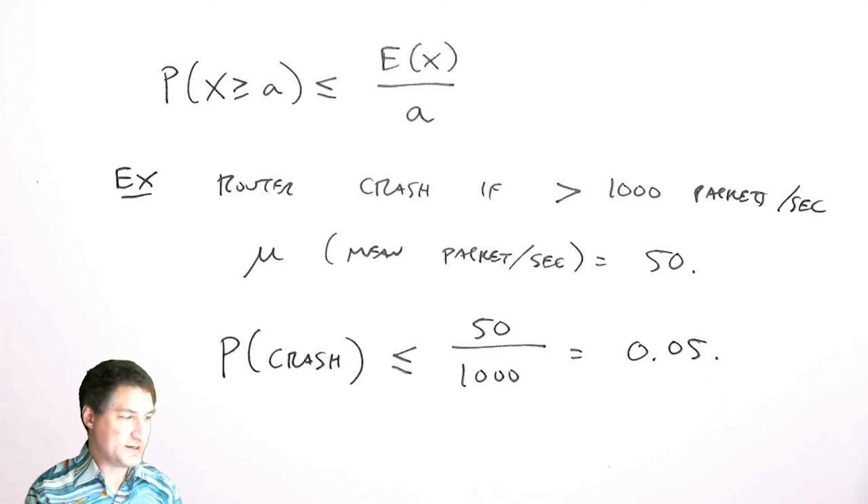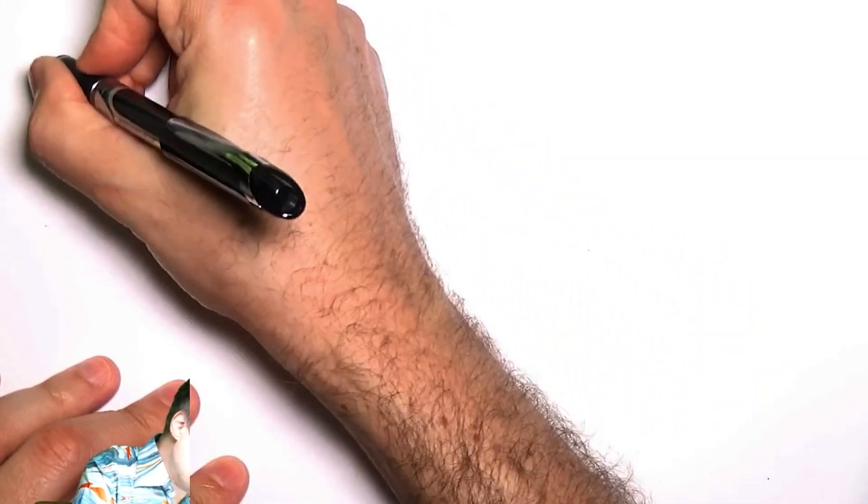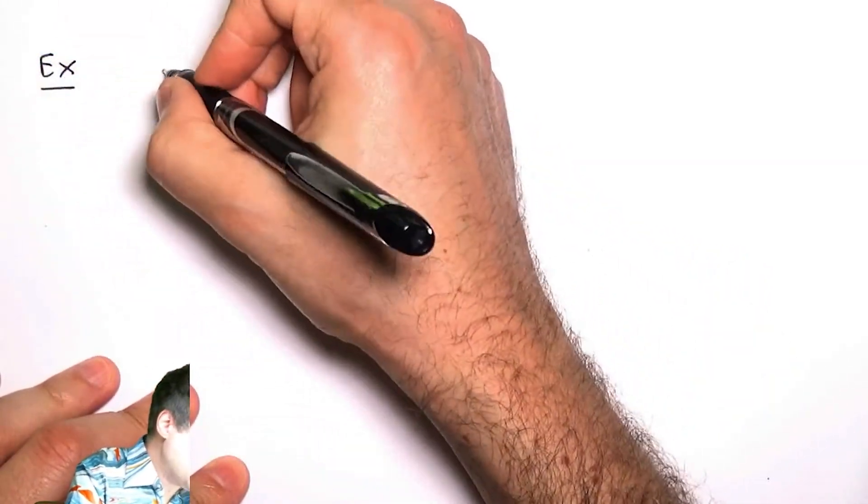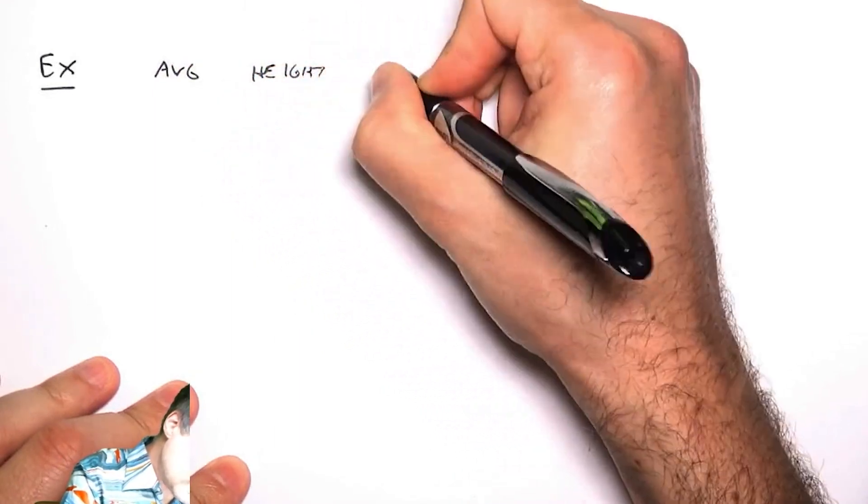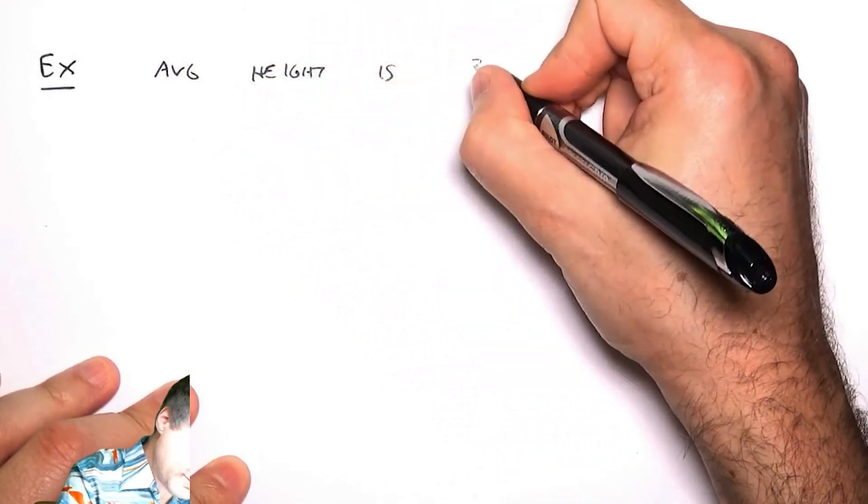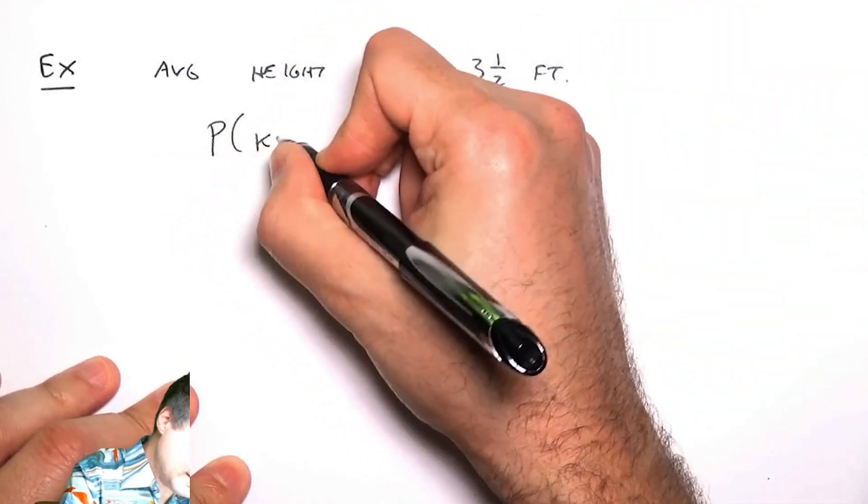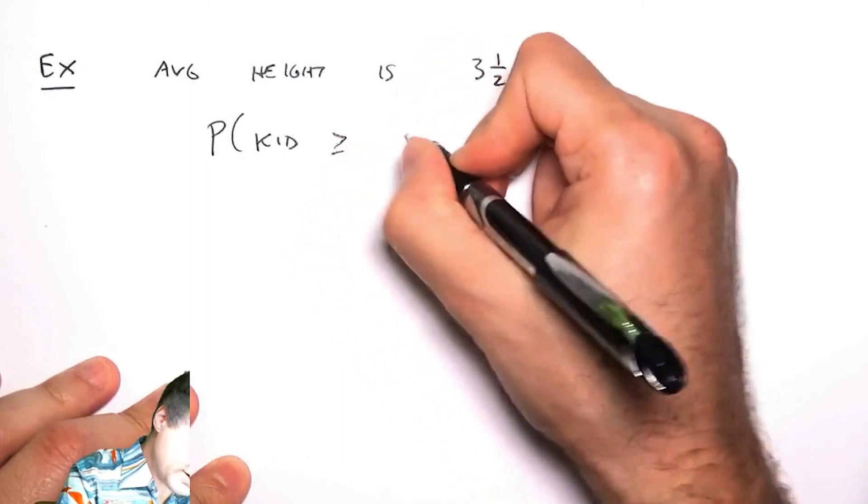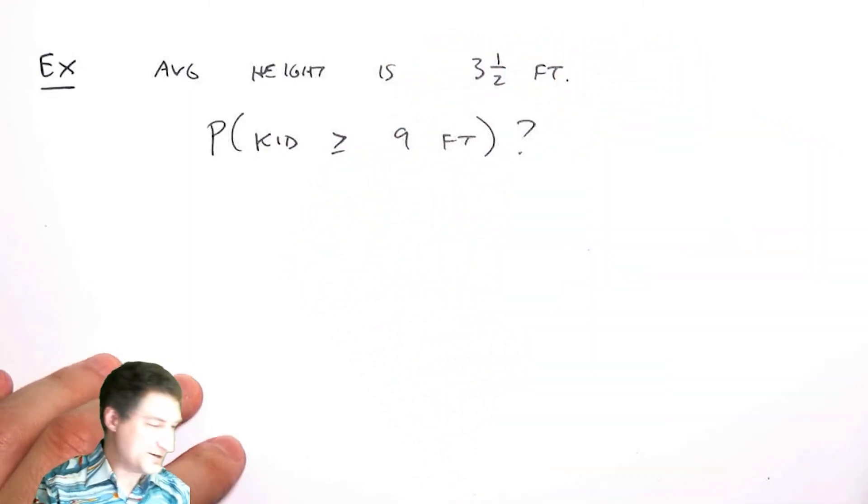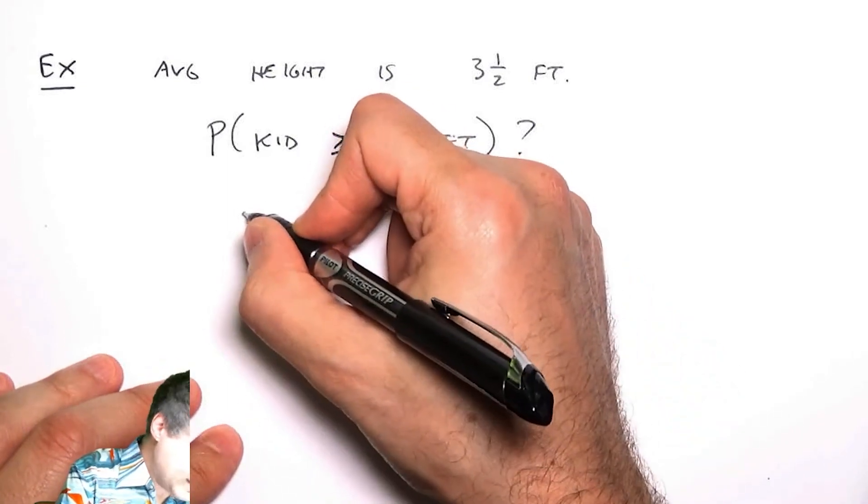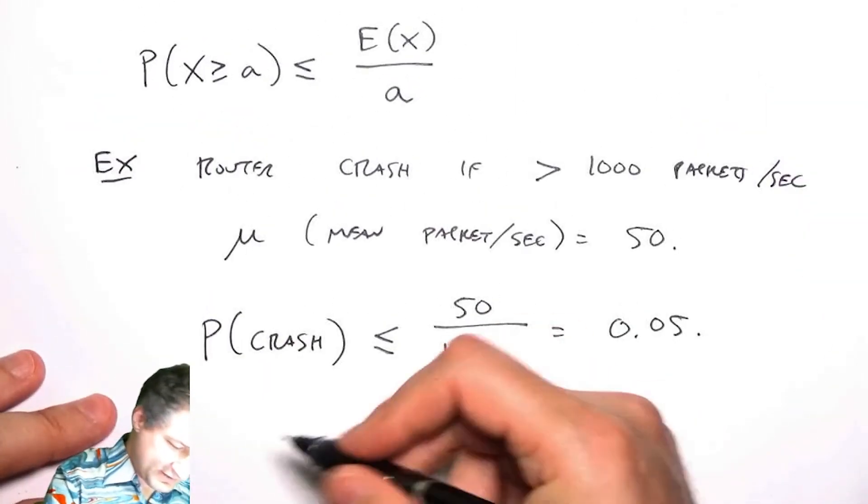Now it could be that this number is really conservative. Here's a case where it's kind of dumb to look at this. Let's suppose that in a kindergarten, the average height of a child is three and a half feet, and I want to know what's the probability that a kid is greater than or equal to nine feet tall. Now of course there are no kids that are nine feet tall. The most important thing, this is called the Markov inequality.